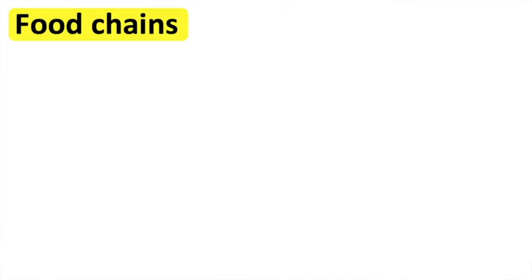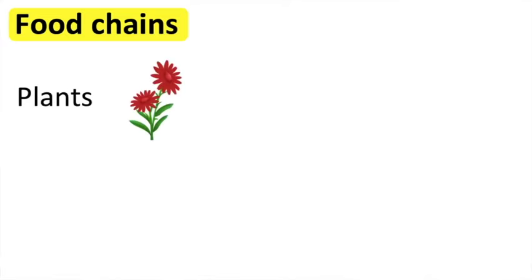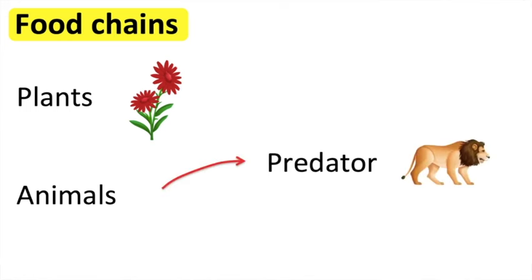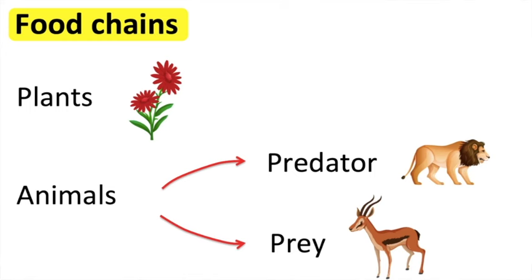All living things need energy to survive, and they get their energy from different places. Plants are known as producers — they make their own food through the process of photosynthesis. Animals are known as consumers — they get their nutrition by eating other living things, such as other animals or plants. An animal that eats another animal is called a predator, and the animal they eat is called prey.